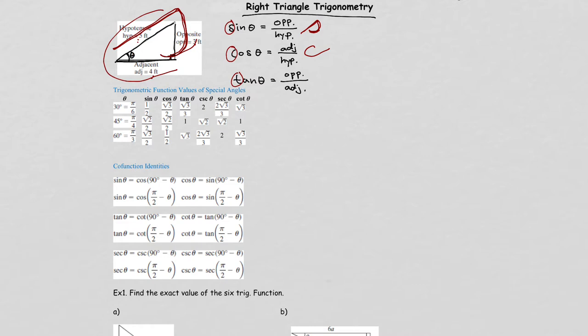Tangent in cursive traces opposite over adjacent. So that's how you can remember which sides to use in order to get sine, cosine, and tangent.